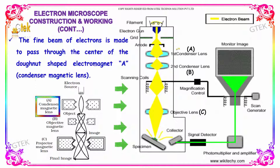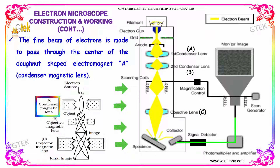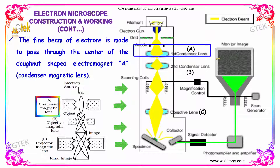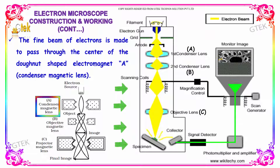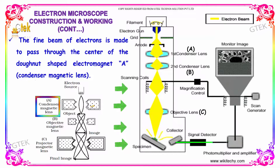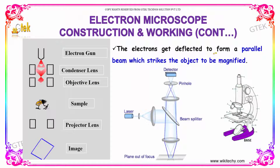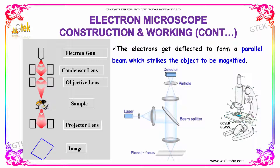The fine beam of electrons is made to pass through the center of the donut-shaped electromagnet A — this is the condenser lens. The electrons are deflected to form a parallel beam which strikes the object to be magnified.